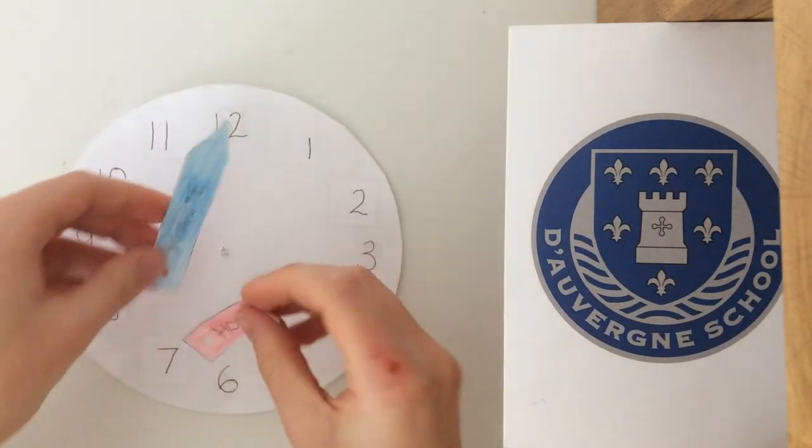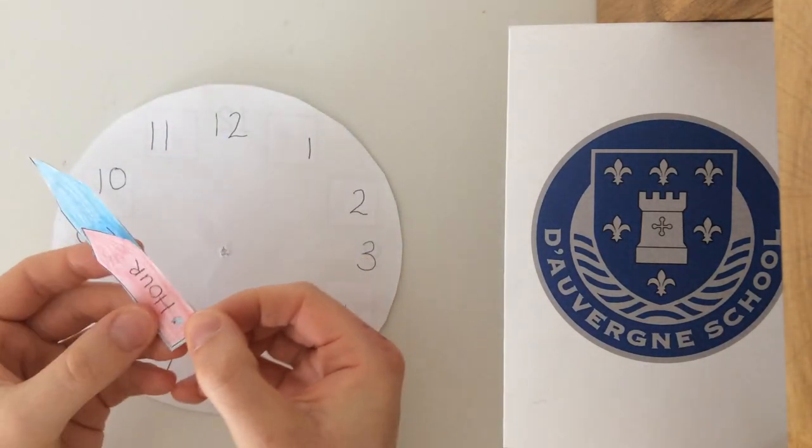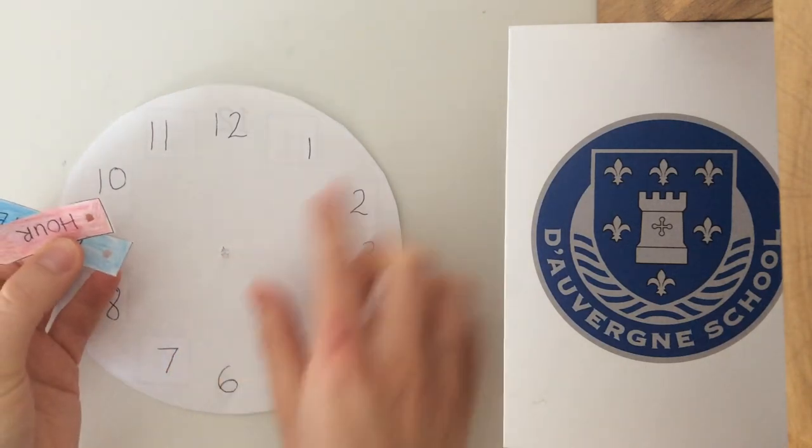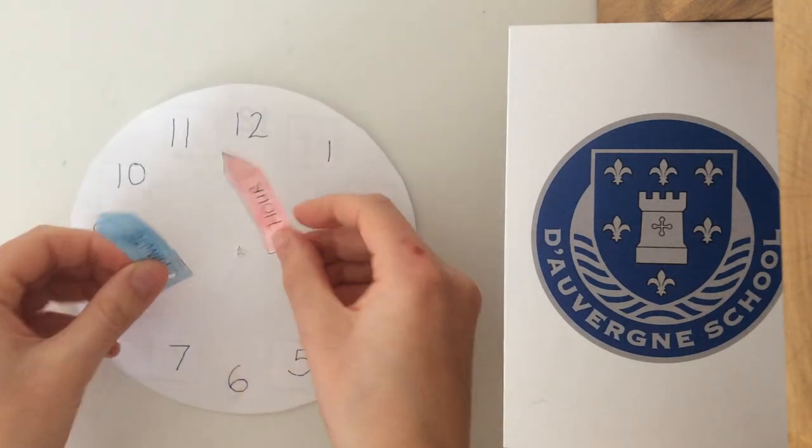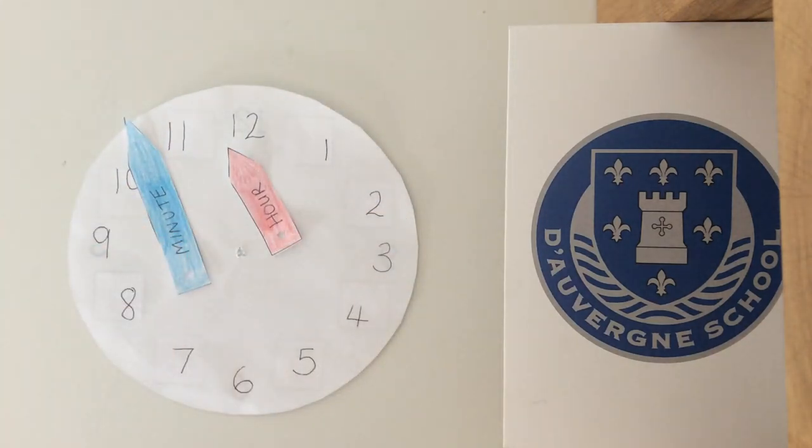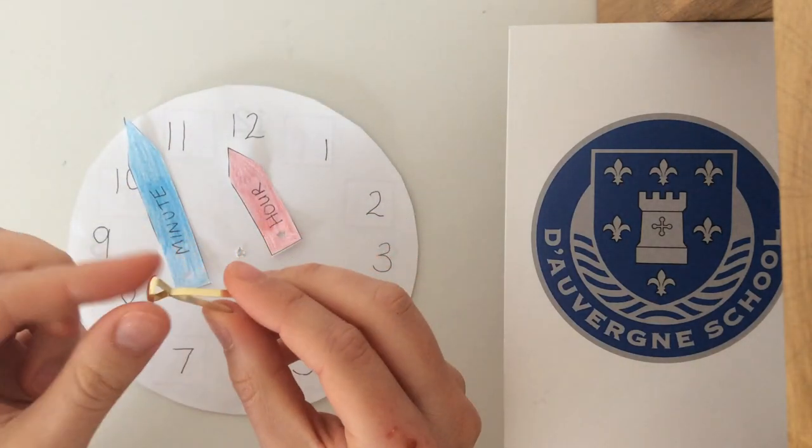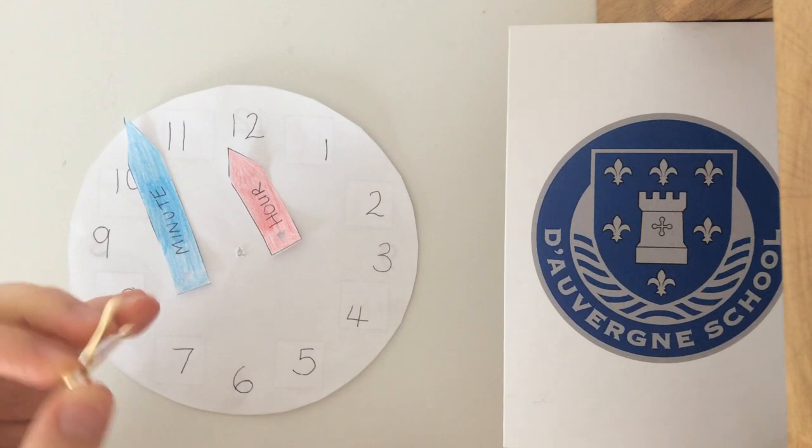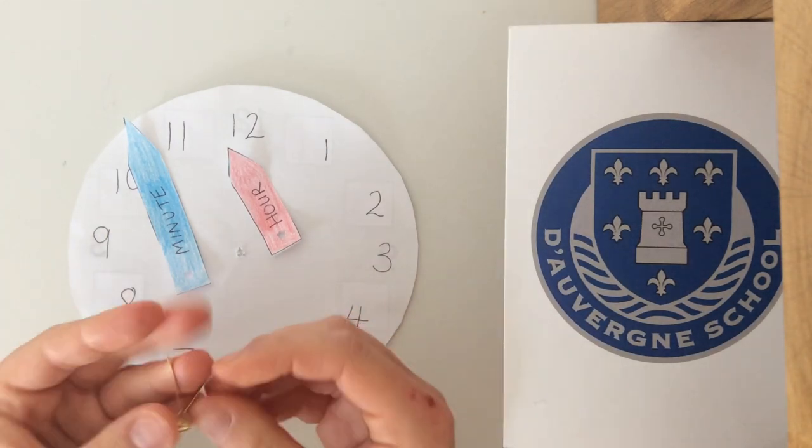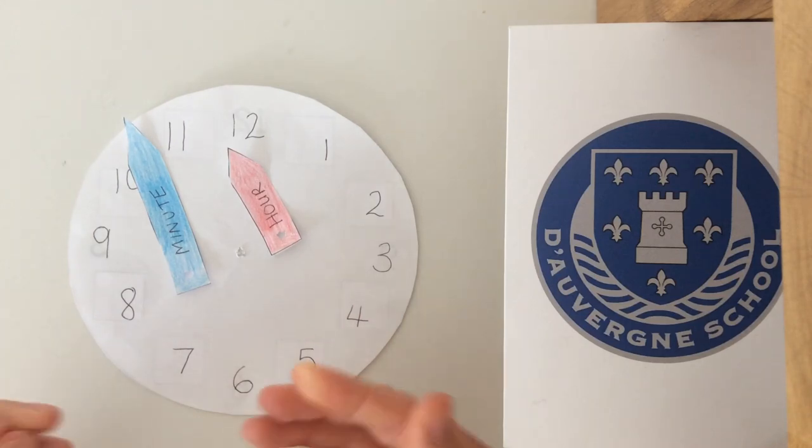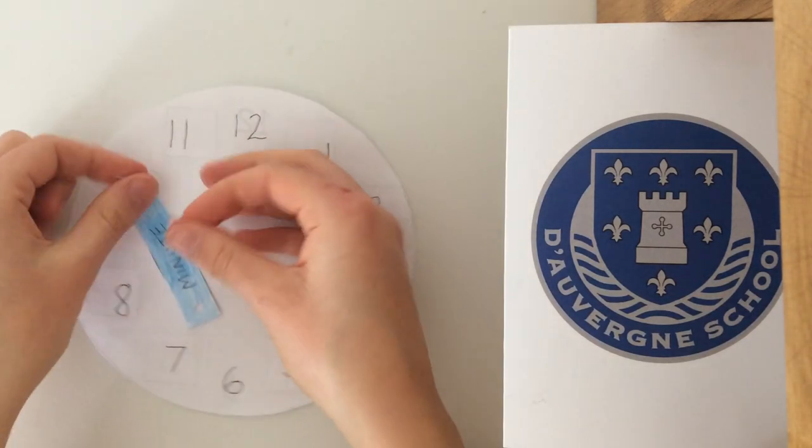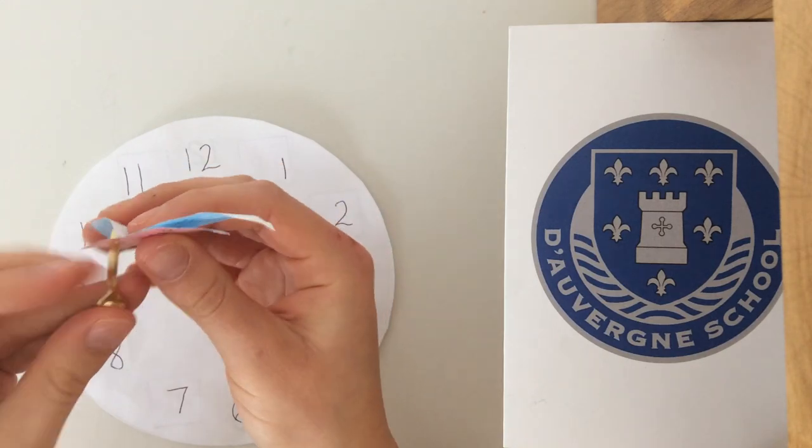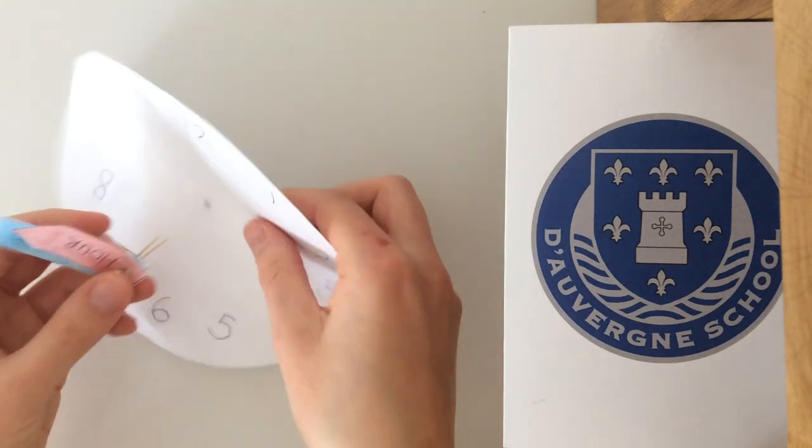Now's the tricky part. We need to be able to attach these hands to our face. As you can see, I have punctured two holes and punctured a hole into my clock. You might want to get an adult to help you do that. I'm going to use a split pin to attach my hands to my clock face. However, I understand you might not have one of these at home, so you might want to find a paper clip and unravel your paper clip, maybe use a bit of gardening wire.